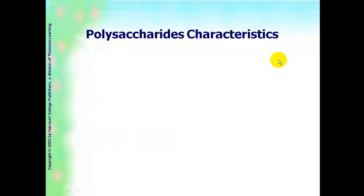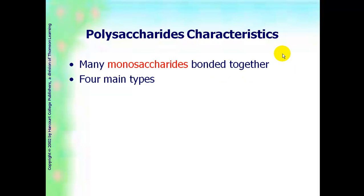The last group of carbohydrates were polysaccharides. And these were many monosaccharides bonded together. There are four main types. First one is cellulose. Second one is starch. Third one, glycogen. Fourth one, chitin. And once we go through each of those, we are done with this podcast.